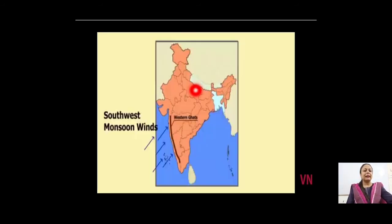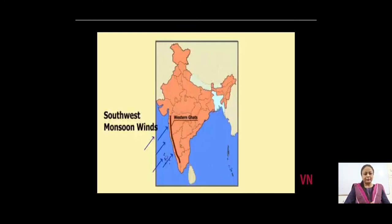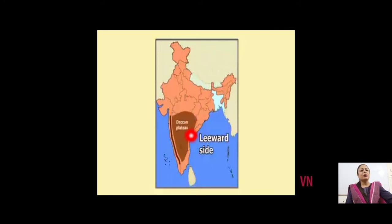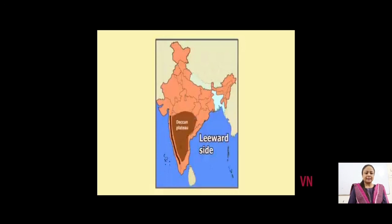The best example is the Western Ghats. When the southwest monsoon winds — which are rain-bearing, moisture-filled winds capable of causing very heavy rainfall — try to enter the continent, they encounter the Western Ghats, a series of hills that pose a barrier to their path. The Western Ghats act as a rain shadow barrier, causing very heavy rainfall on the western coastal plains of India. On the other side lies the Deccan Plateau, which is on the leeward side of the Western Ghats and therefore receives very scanty rainfall. So the western side of the Western Ghats receives very heavy rainfall, while the Deccan Plateau on the leeward side receives very scanty rainfall.